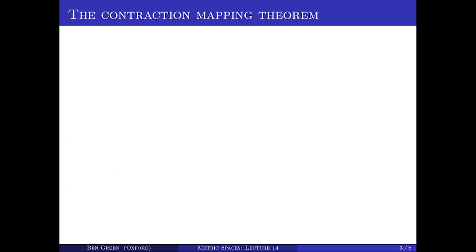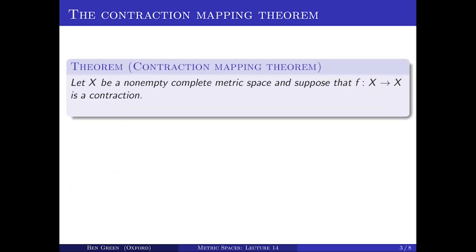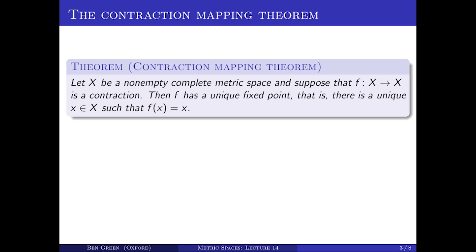So that's the definition of a contraction. What's the contraction mapping theorem? It states the following: suppose I have a non-empty complete metric space X, and suppose that F from X to X is a contraction. Then F has a unique fixed point — in other words, there's a unique little x in big X such that F(x) equals x.